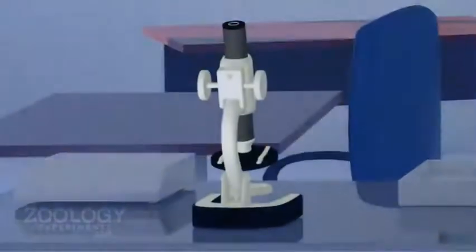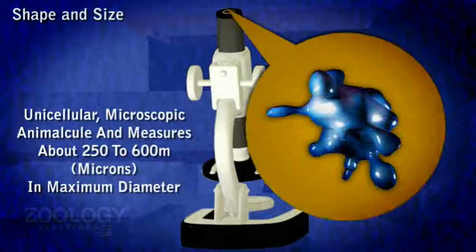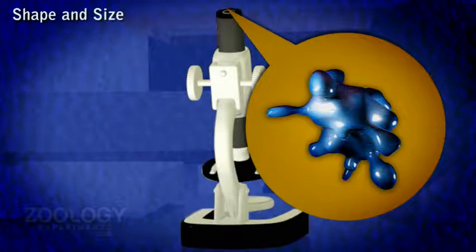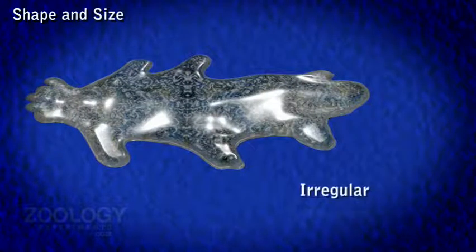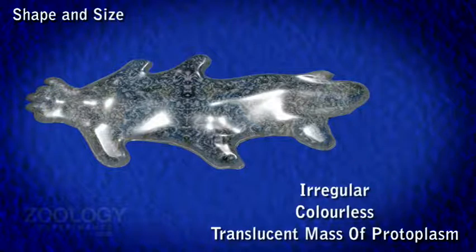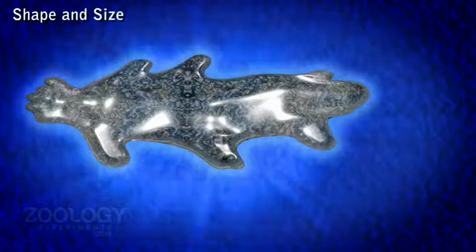Shape and Size. Amoeba Proteus is a unicellular microscopic animal and measures about 250 to 600 microns in maximum diameter. The larger Amoeba Proteus is just visible as a whitish spot by the naked eye. Under the microscope, it appears as an irregular, colorless and translucent mass of protoplasm. It is constantly changing its shape, producing and withdrawing finger-like processes called pseudopodia.